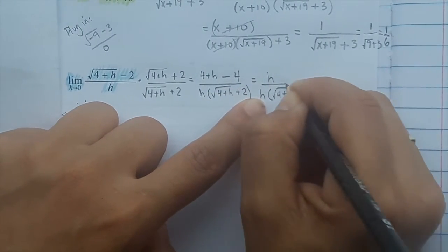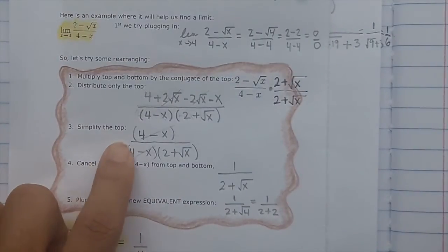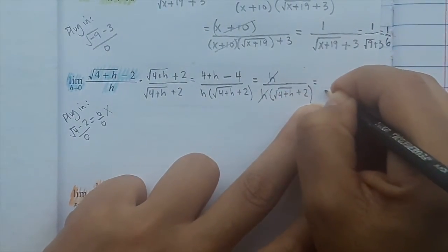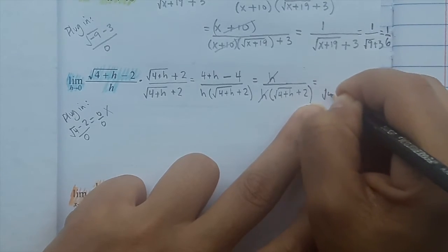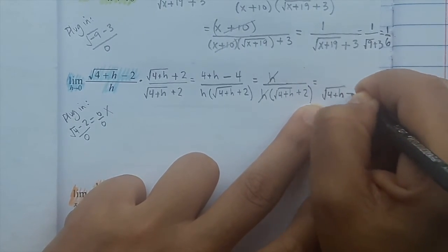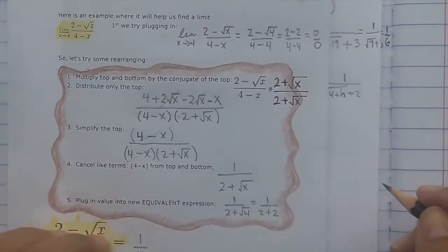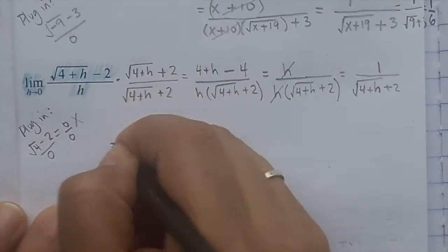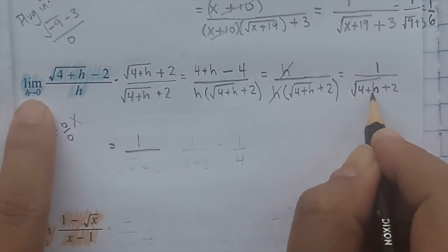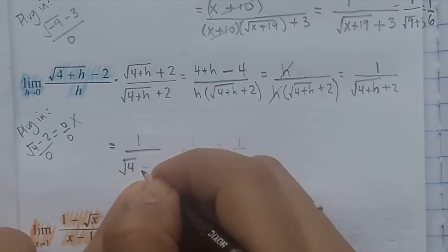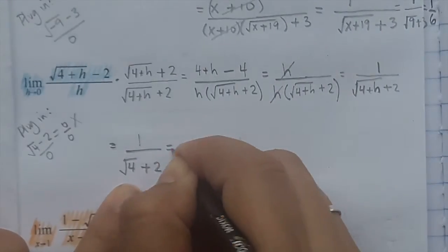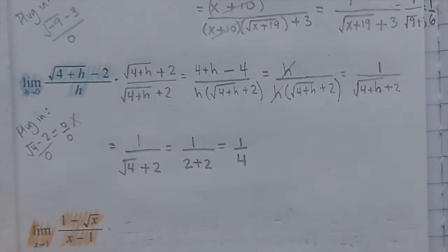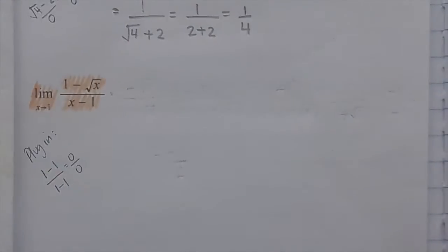We can cancel the h's. Then the final step is to plug in what h is approaching, which is 0. Put 0 everywhere you see h. That gives 1 over (radical 4 plus 2), which is 1 over (2 plus 2) = 1 over 4. So the limit as h approaches 0 is 1 over 4.